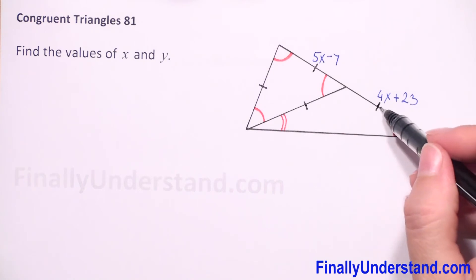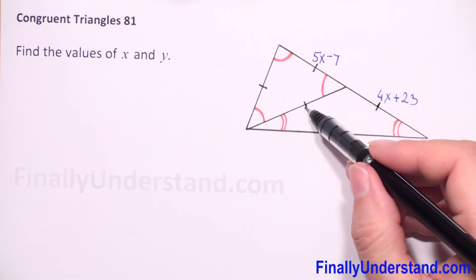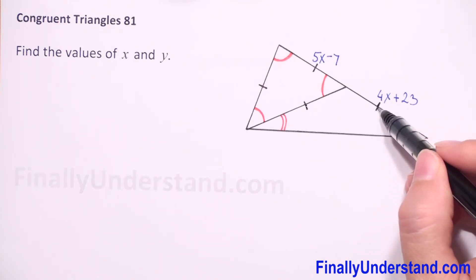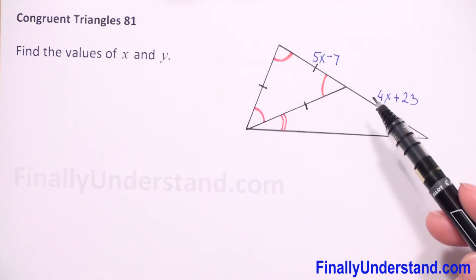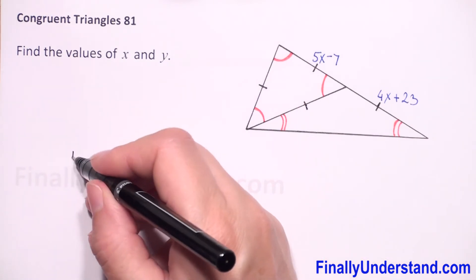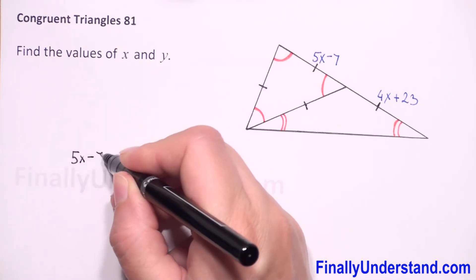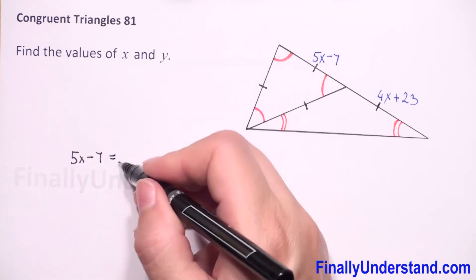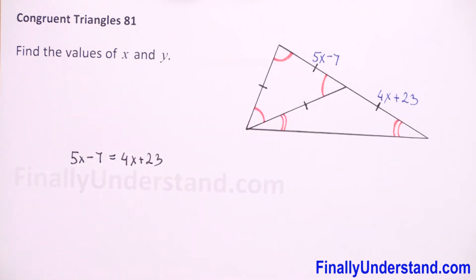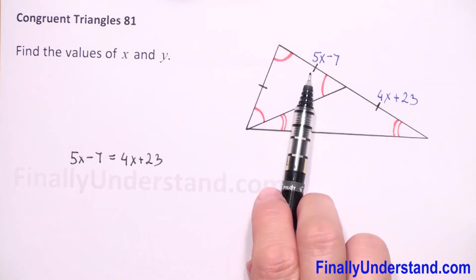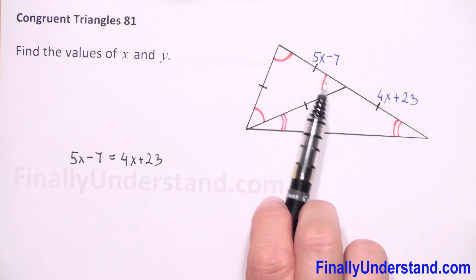So now we can write equation that 5x minus 7 is equal to 4x plus 23, because we have here two congruent sides. So now we have to solve this equation.